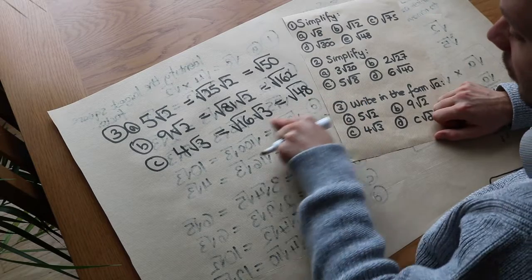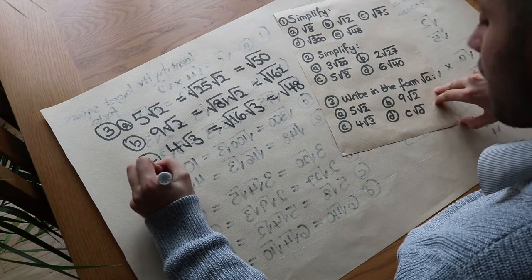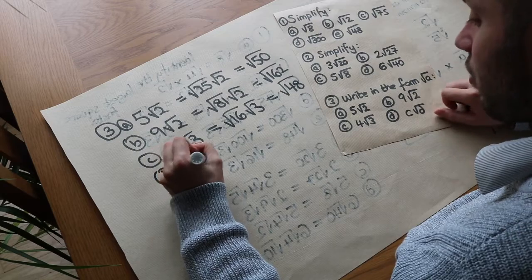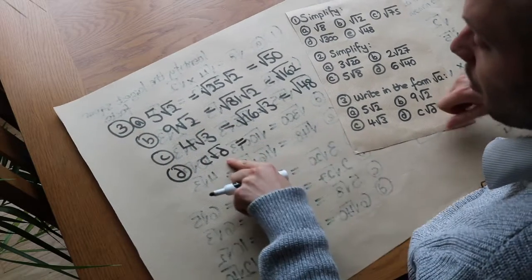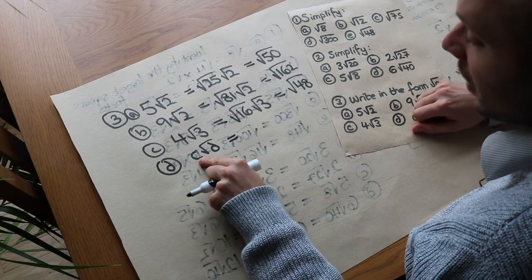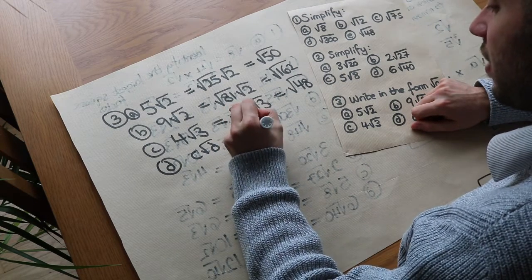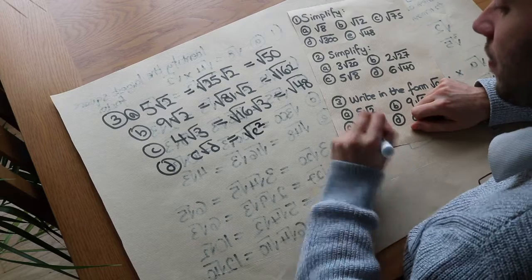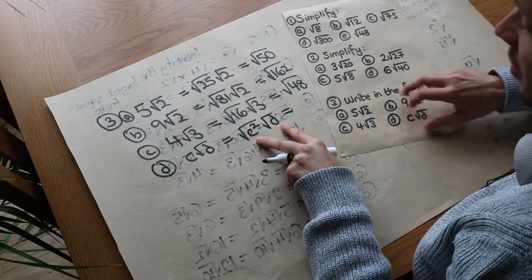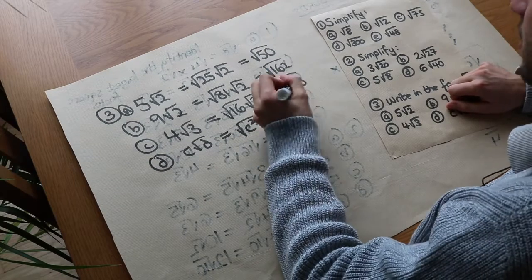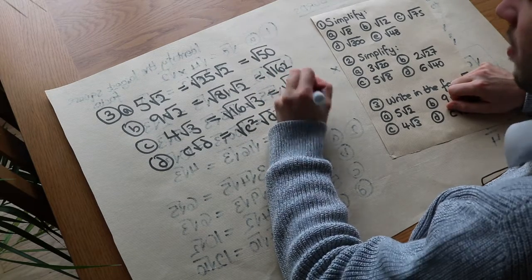You can see this is basically just a reverse process of simplifying a surd — like reverse simplifying. Finally, for c root d — it's algebraic, but we use exactly the same principle. c can be written as the square root of c squared, and we still multiply by root d. That means we can multiply those two together: c squared times d is c squared d, so it's the square root of c squared d.